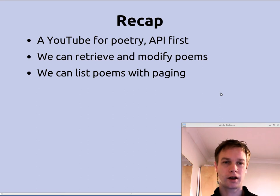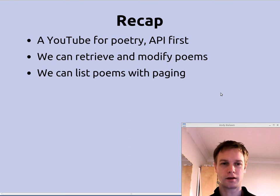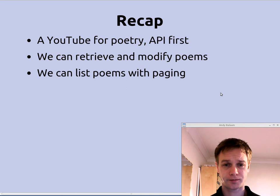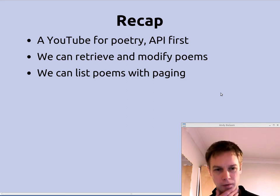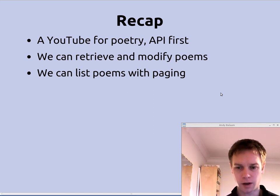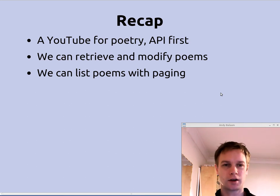First of all, what we're doing: we're making a kind of a YouTube for poetry. We're going to let people upload poems and we're writing an API first, before we write any of the rest of it. So far you can get poems and modify poems all through this HTTP REST API. No website yet, but there will be one. And as we saw last time, we can ask for the list of poems and we can page through it — which is important when this becomes an extremely popular site with a lot of poems.